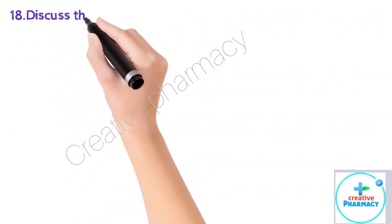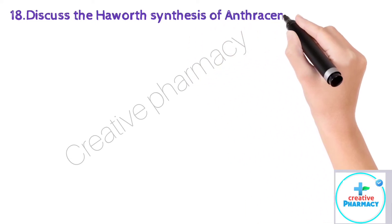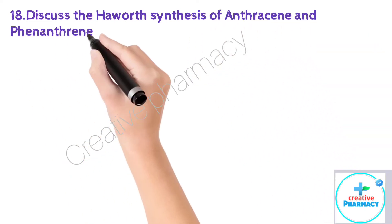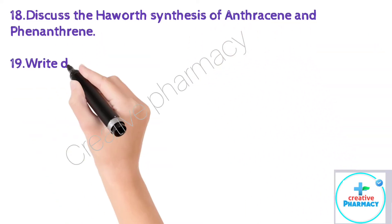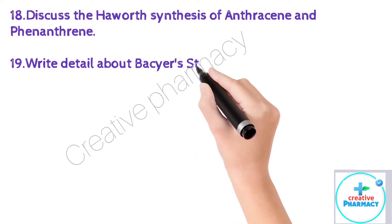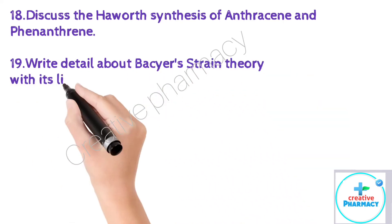Question 17: Give Baeyer's strain theory and its limitations. Question 18: Discuss the Haworth synthesis of anthracene and phenanthrene. Question 19: Write in detail about Baeyer's strain theory with its limitations.